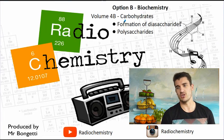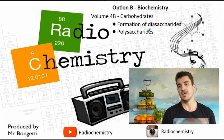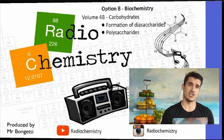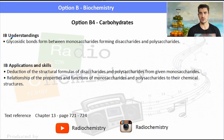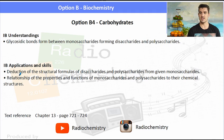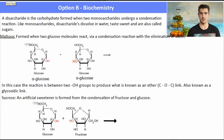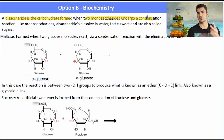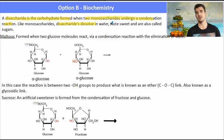We talk about the formation of disaccharides and polysaccharides. In the last video, we talked about just monosaccharides — one sugar. We need to be able to describe the bond, the link that forms between monosaccharides when they convert to form disaccharides and polysaccharides, and we need to be able to do some drawings as well. A disaccharide is a carbohydrate formed when two monosaccharides undergo a condensation reaction. Like monosaccharides, disaccharides dissolve in water, taste sweet, and are also called sugars.